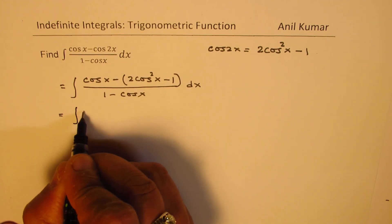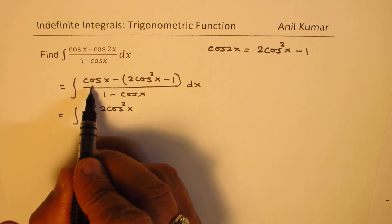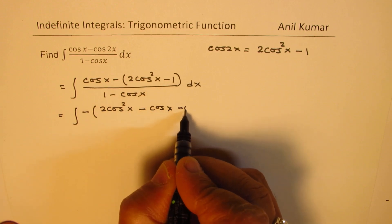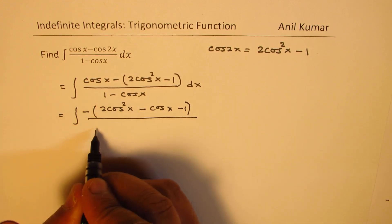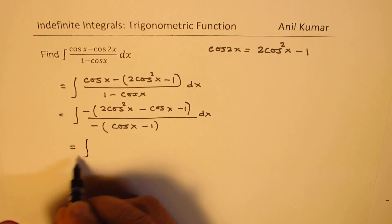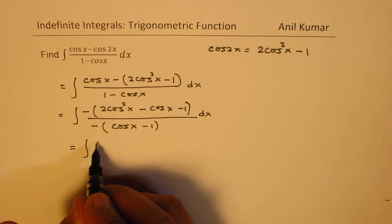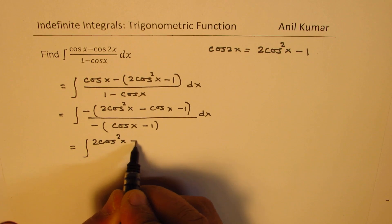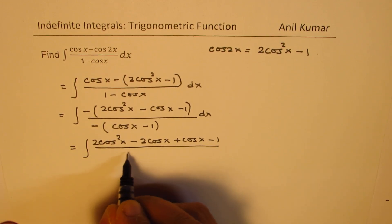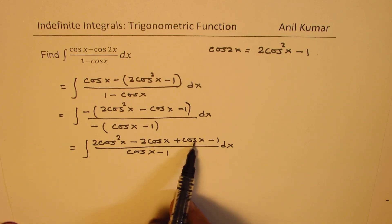Rewriting, we take the negative sign inside and rearrange, getting 2 cos squared x minus cos x minus 1 in the numerator, and cos x minus 1 in the denominator. We split minus cos x as minus 2 cos x plus cos x, giving the numerator as 2 cos squared x minus 2 cos x plus cos x minus 1 over (cos x minus 1) dx.